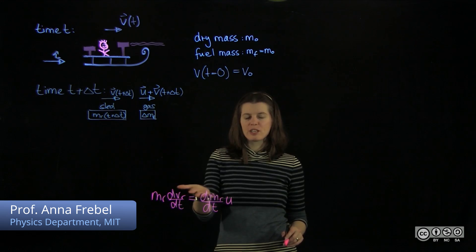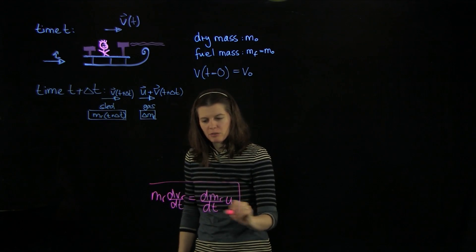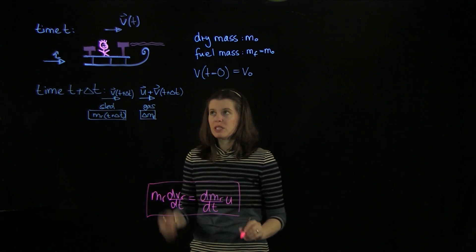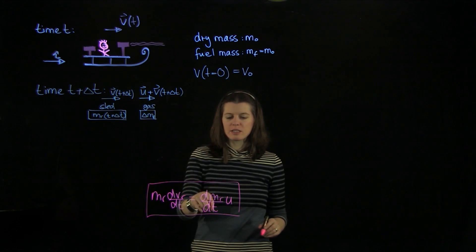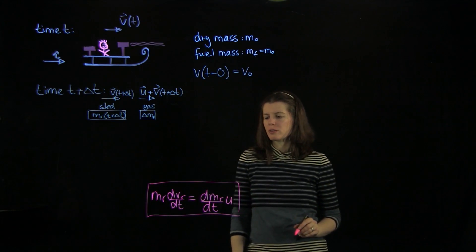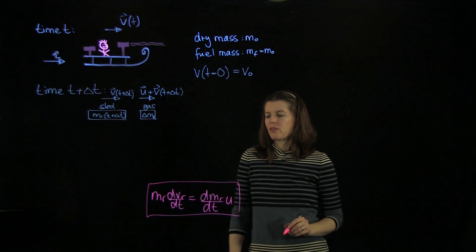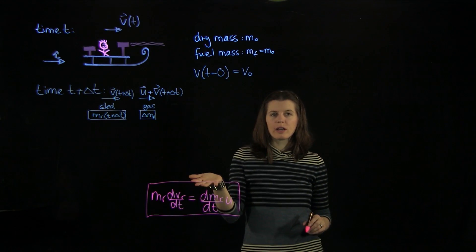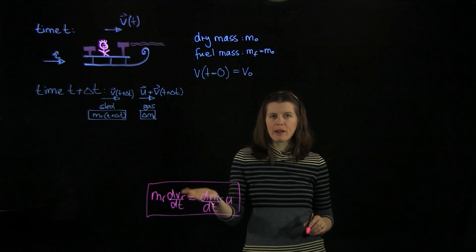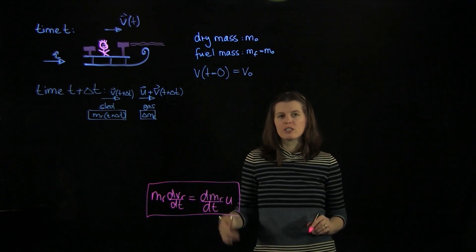We just derived this relation here, the relation between the differential of the speed of the rocket's sled and the differential of the mass of the rocket. And we want to ultimately get the speed of the rocket. So we have to apply a technique called separation of variables, and then we want to integrate.